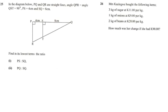Okay, question 25 was as follows. In the diagram below, PQ and QR are straight lines. Angle QPR is equal to angle QST, which is equal to 90 degrees. PS is equal to 4 cm and SQ is equal to 8 cm.